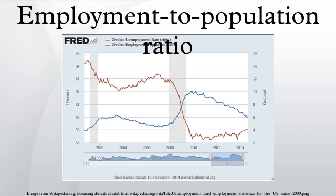The Organization for Economic Cooperation and Development defines the employment rate as the employment-to-population ratio. The employment-population ratio is many American economists' favorite gauge of the American jobs picture. According to Paul Ashworth, chief North American economist for Capital Economics, the employment-population ratio is the best measure of labor market conditions.